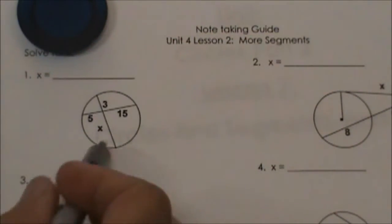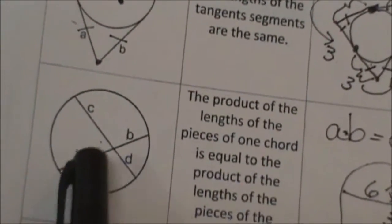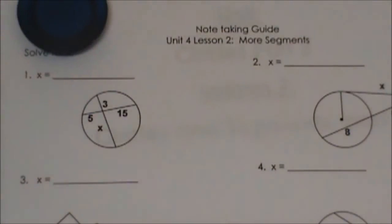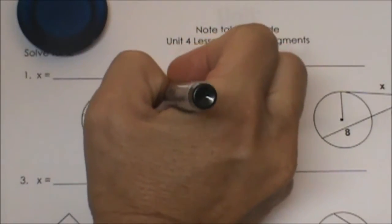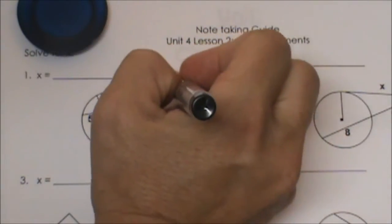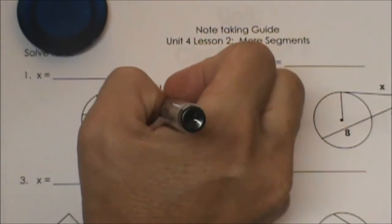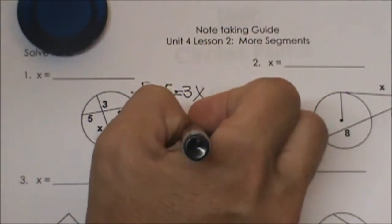This one's fairly straightforward. This one falls in the chord-chord category, so it's just going to multiply chord parts by chord parts. We're going to take 5 times 15 equals 3 times x, so 5 times 15 is 75 equals 3x, so x is 25.